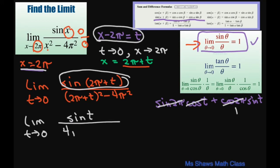That's going to be 4π² plus 4πt plus t² minus 4π². And what happens with this is the 4π² is canceled.